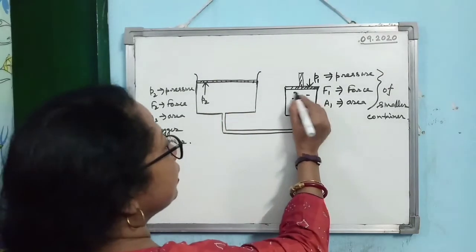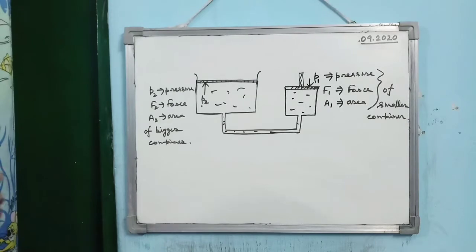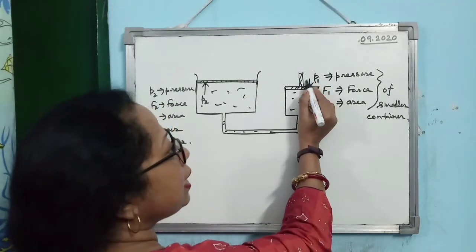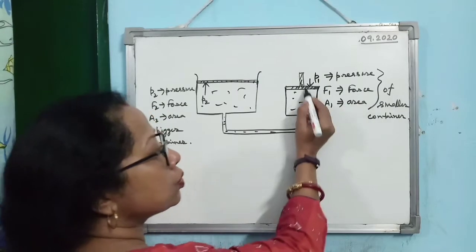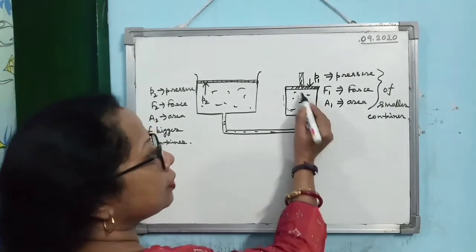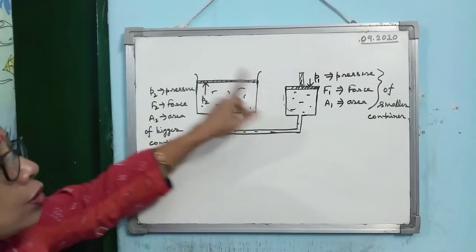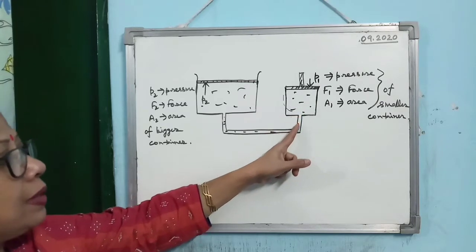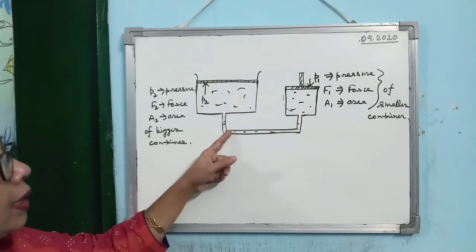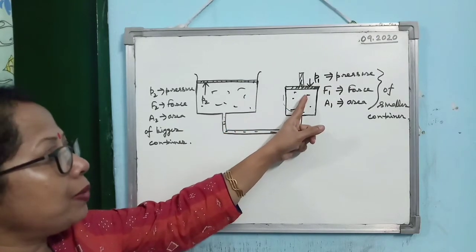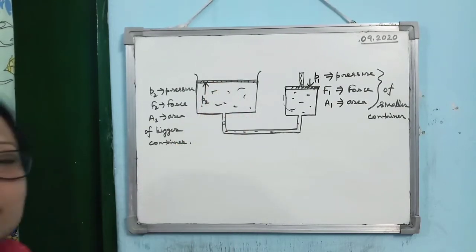Water is taken within this system — it is confined. Suppose you press the piston with pressure P1. A force will act and let the cross-sectional area of the smaller container be A1. Let P2 be the pressure on the bigger container. The pressure P1 transmits through the pipe and arrives at the bigger container as P2.